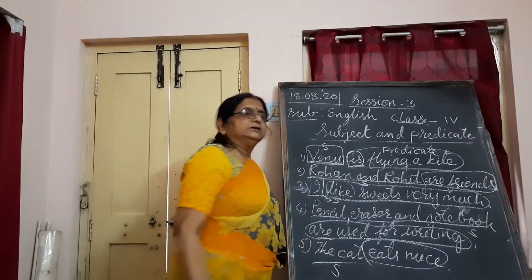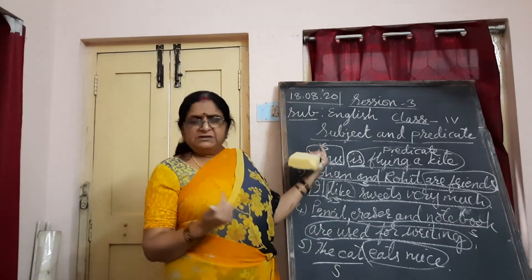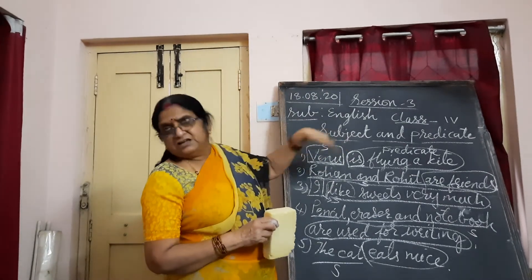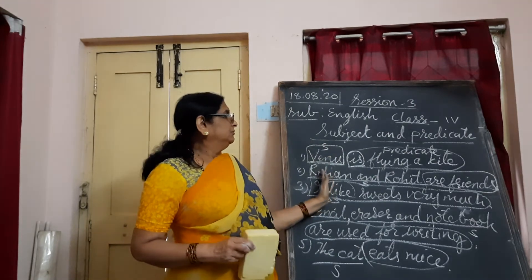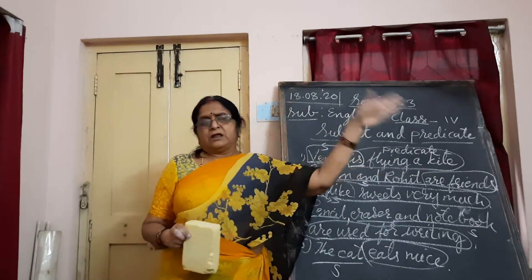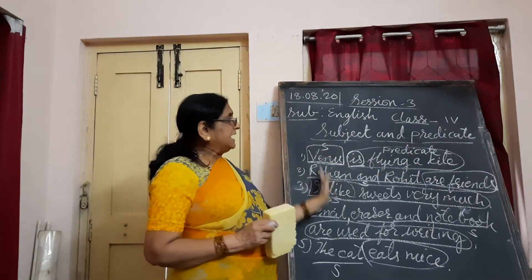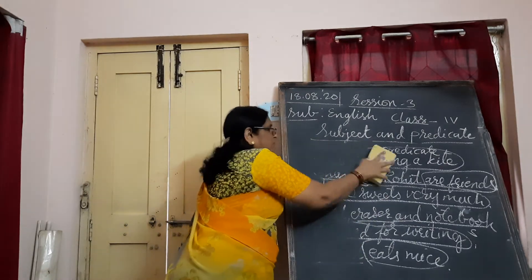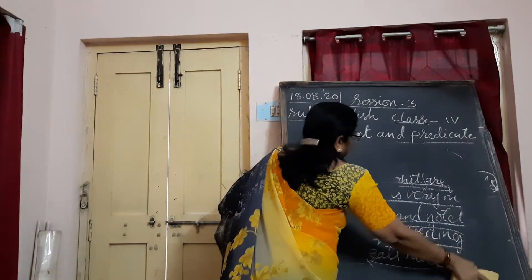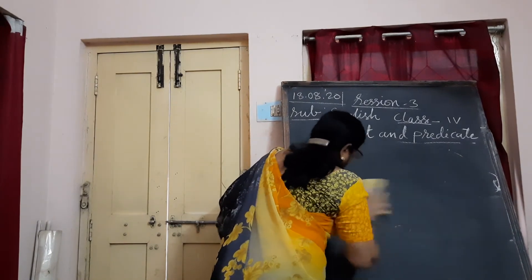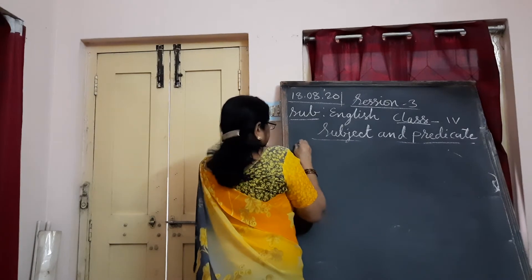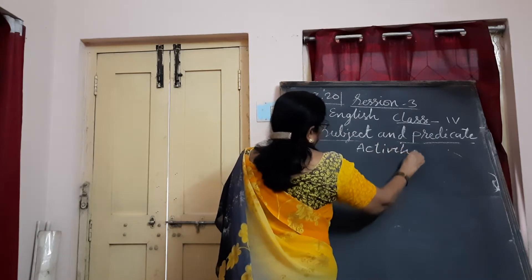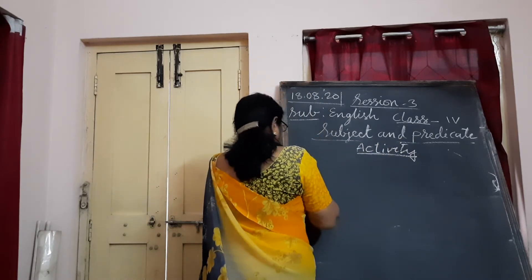Subject is always in the beginning — the naming word or noun form, it can be one or more than one. The people or things that perform the action — they are the subject. And what action is being done is predicate. Now I'll give you one small activity. Please, you have to do it at home — only four to five sentences.